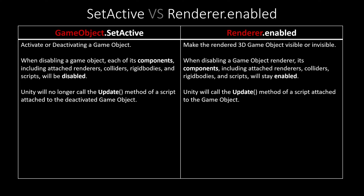When disabling a game object using setActive, Unity will no longer call the update method of a script attached to the deactivated game object. On the other hand, when using renderer.enabled, Unity will still call the update method for the script attached to that game object.